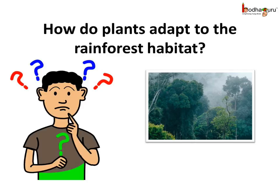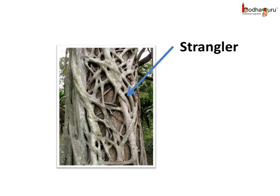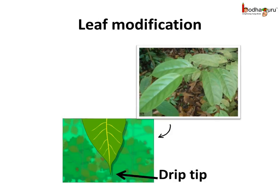How do plants adapt to the rainforest habitat? The top branches of the tall trees form a dense umbrella-like cover called the canopy. This canopy prevents sunlight from reaching the floor, hence very few plants are able to survive on the rainforest floor. There are few plants like the strangler and the lianas which try to reach the sunlight by creeping up the nearby trees. The leaves of the rainforest trees have a special pointed tip — this is because rain water runs down the leaf easily. This tip is called the drip tip.